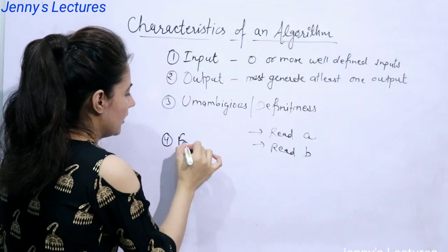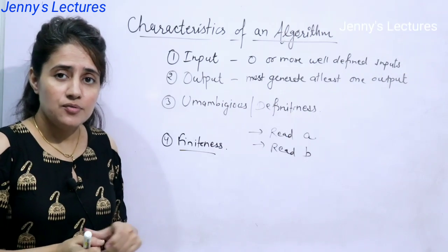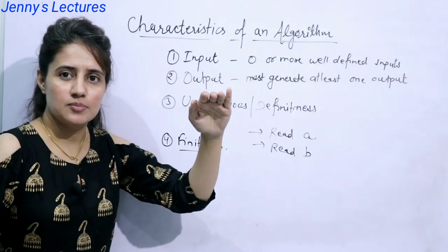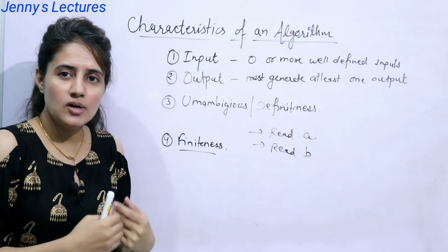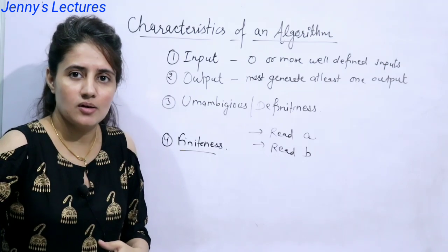Next one is finite. Finiteness means what? Every algorithm must contains finite number of steps means the steps must be countable. It's not like that you are writing steps, infinite steps are there.